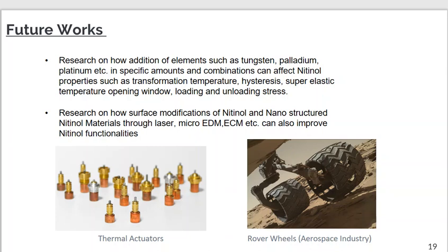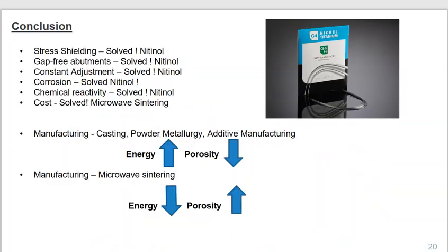To conclude, we had many problems: stress shielding effect, gap-free abutments, constant adjustment problems for braces, corrosion, and chemical reactivity of stainless steel and titanium. All of these are solved by Nitinol. For cost, we could produce Nitinol from many methods, but we came down to a method which required low time, delivered high porosity, required less energy, and had less cost. That problem was solved by microwave sintering. Thank you.